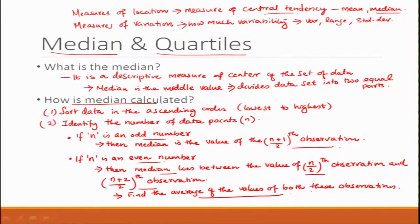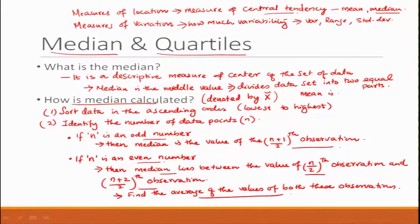The median is denoted by x̃ (x tilde) — the squiggly symbol. The mean, on the other hand, is denoted by x̄ (x bar) — with a line on top.